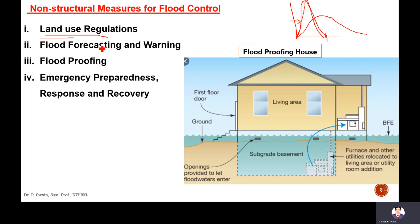Next is flood forecasting and warning. Flood forecasting means if we can forecast the flood — predict the rainfall and predict the flood — then the reservoir operation can be done efficiently. If we know how much flood is coming to the river, we can release some water to the downstream and have space in the reservoir to store rainfall water, so the flood peak can be reduced. That is a non-structural measure to control flood.